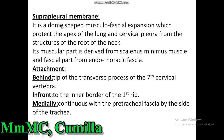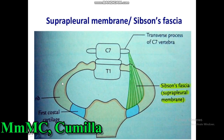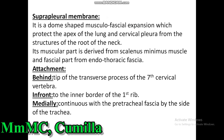The suprapleural membrane is a dome-shaped musculofascial expansion that protects the apex of the lung and the cervical pleura from structures of the root of the neck. Its muscular part is derived from the scalenus minimus muscle and its fascial part from the endothoracic fascia. Attachment: behind, the tip of the transverse process of the 7th cervical vertebra; in front, the inner border of the first rib; medially, it is continuous with the pretracheal fascia by the side of the trachea. The suprapleural membrane comes in your written exam as a short note.